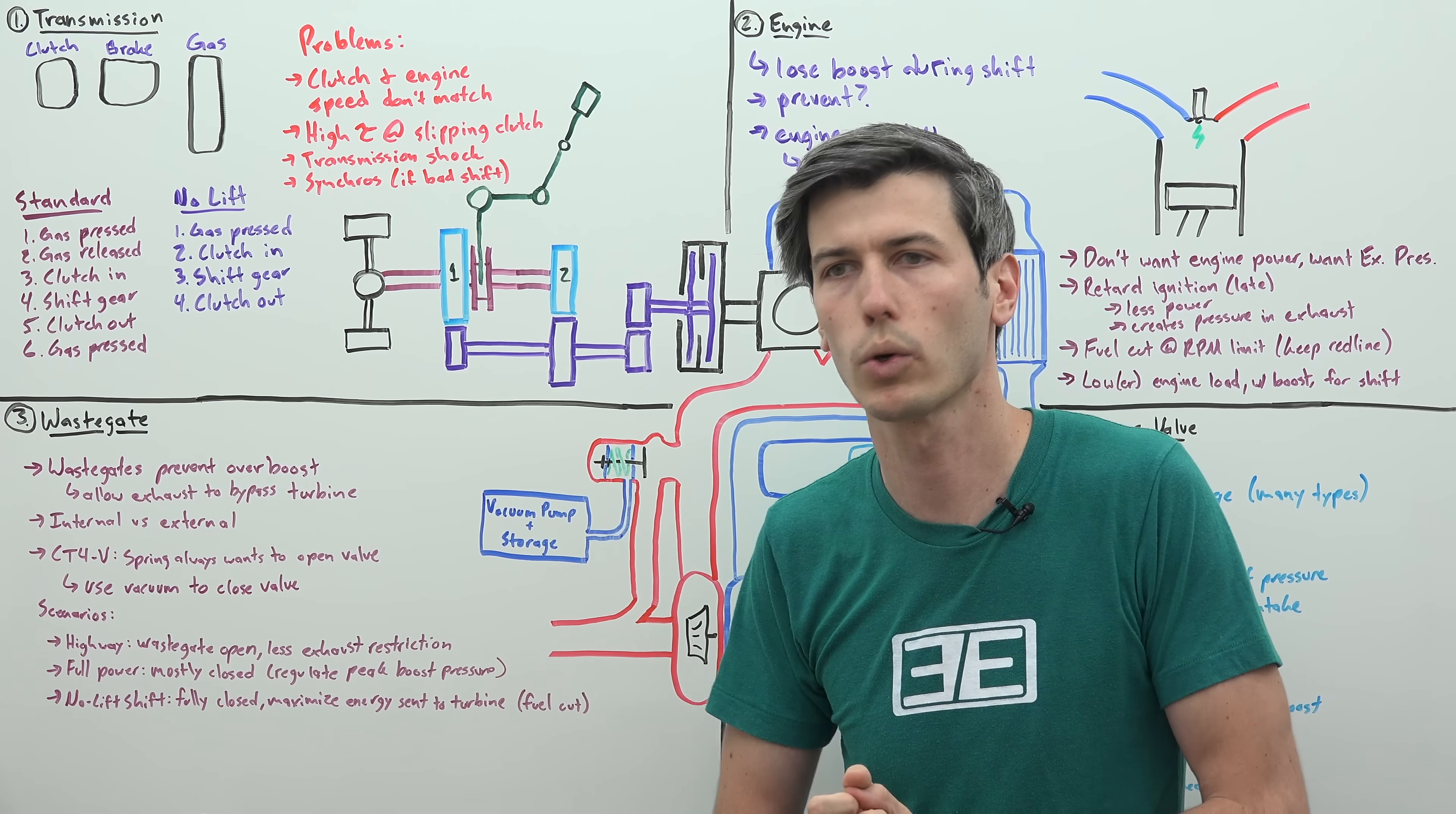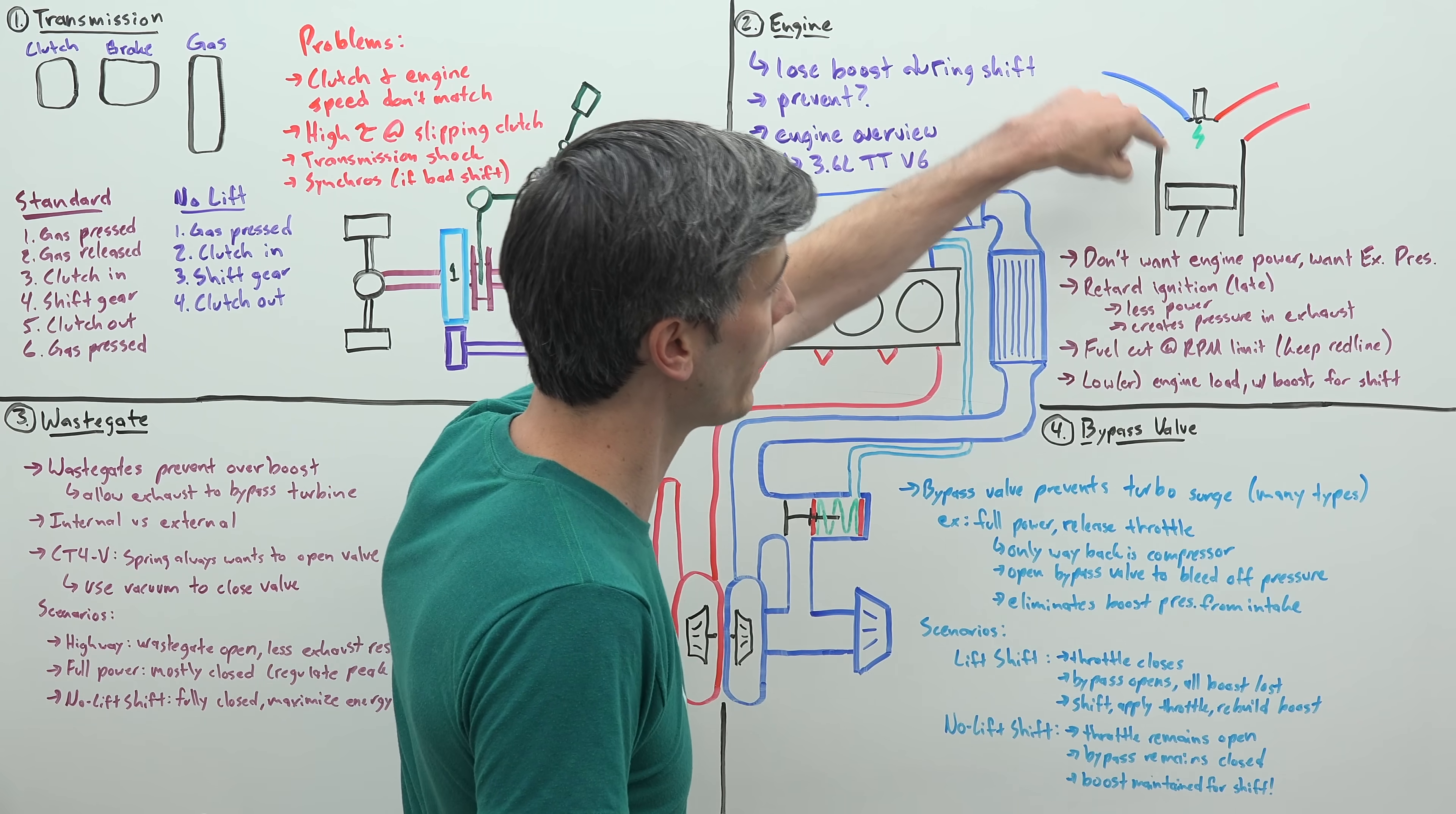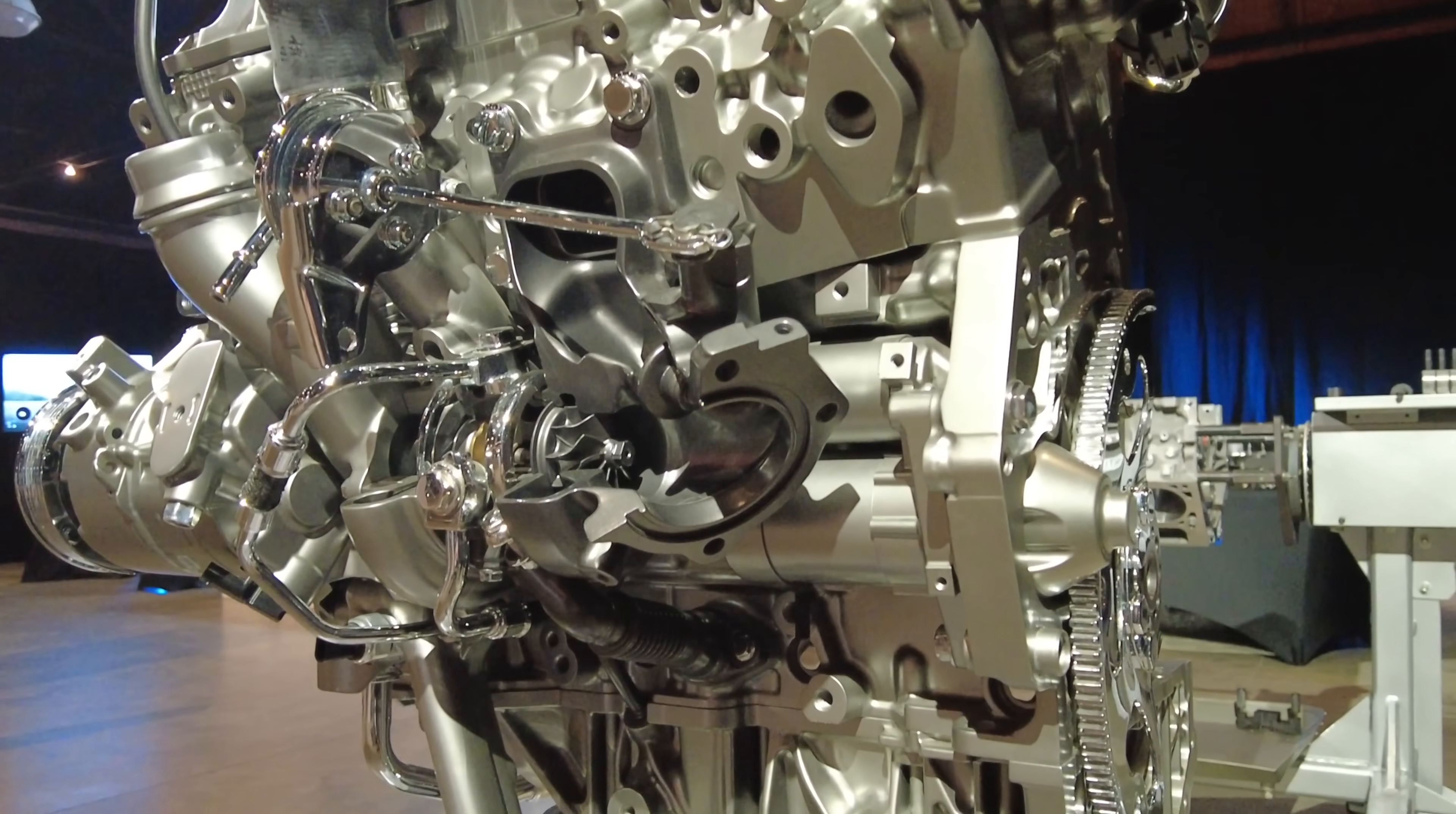You've still got a bunch of RPM that are going to happen in just that quarter of a second. So what you're doing is you're fully closing this to ensure that while you're bouncing off that rev limiter, cutting fuel, the fuel that is used, and the fuel that is used to keep that engine at red line, all ends up going through the turbocharger and keeping that thing spooled up so that you still have boost with the engine.